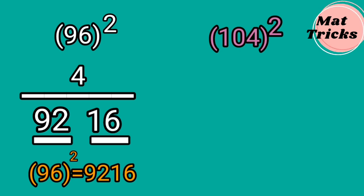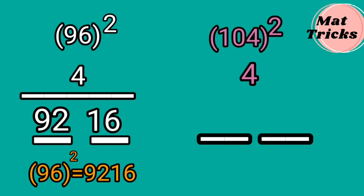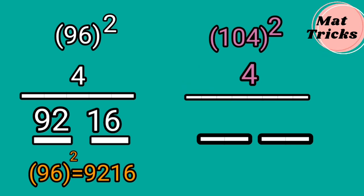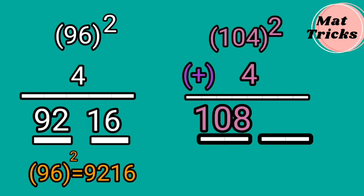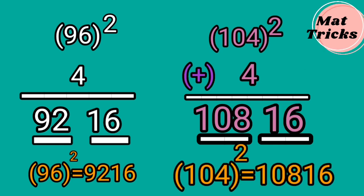Now let us move to the next example, 104 whole square. Write 2 blanks. The difference between 104 and 100 is 4, so write 4 under 104. Since 104 is above 100, add 4 to 104 — we get 108. Write 108 in the first blank. The second operation is squaring: 4 square is 16 in the second blank. Therefore, 104 whole square is 10,816.